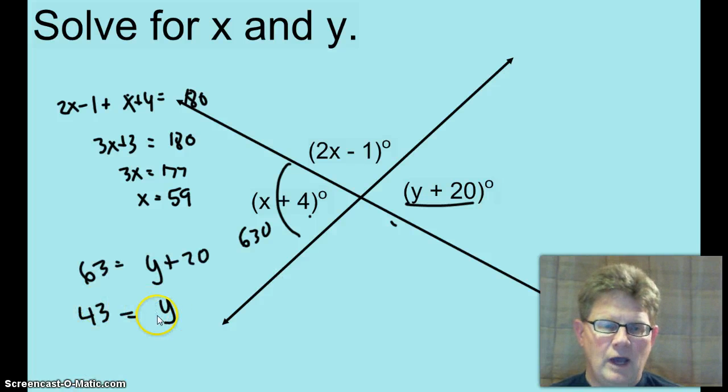Yes, 63 degrees. So now using the 63 and this vertical angle here, write an equation for y and solve. And when you do, you get y equals 43. This does conclude Honors Geometry Lesson 1.5, Angle Pairs.